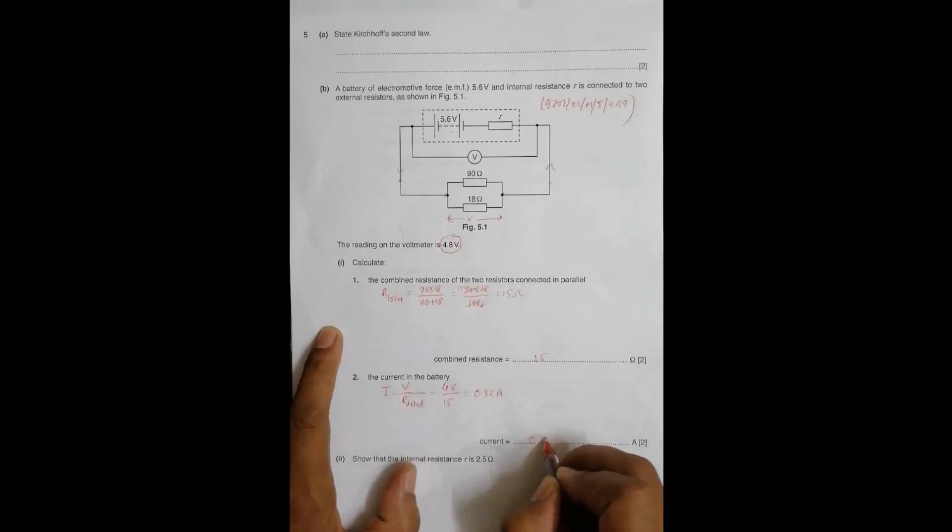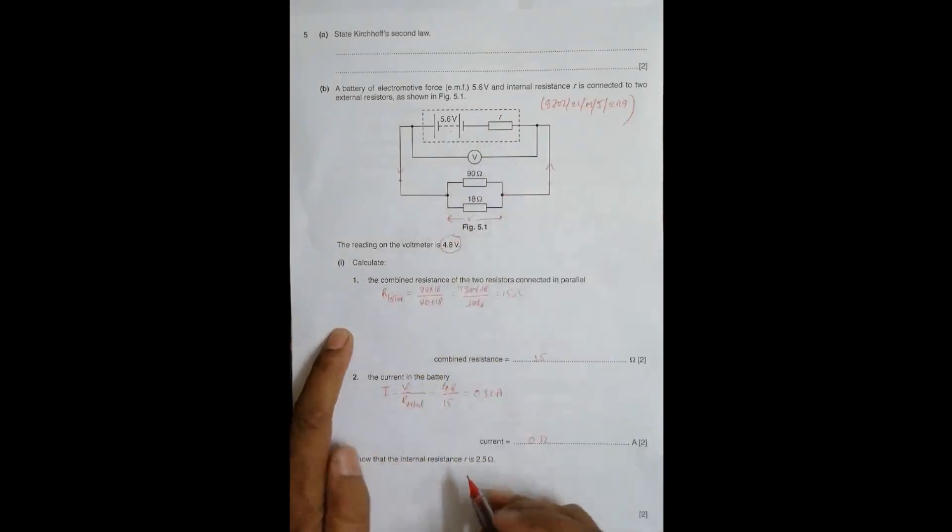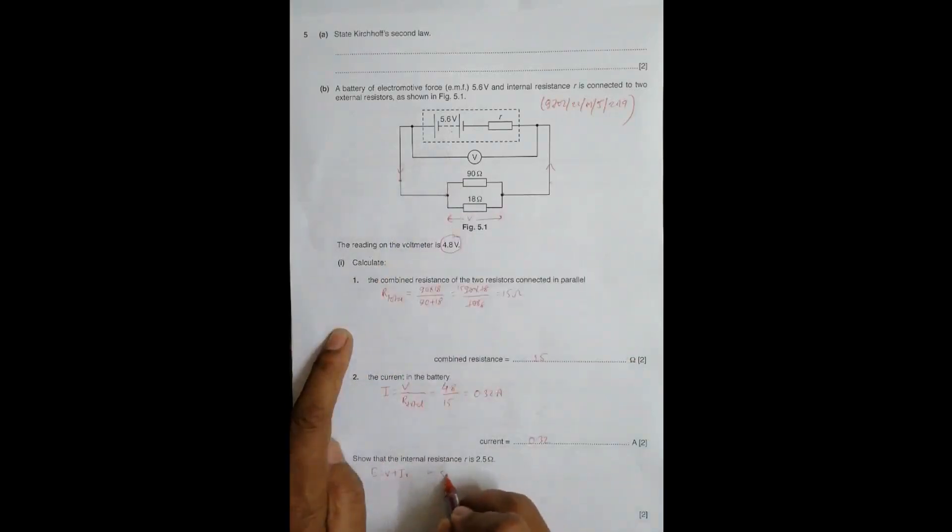Now I have to find the internal resistance. The equation for this is: emf equals V plus I times r. So emf, which is 5.6, equals the terminal PD, which is 4.8, plus the current we just found, 0.32, times the internal resistance r.